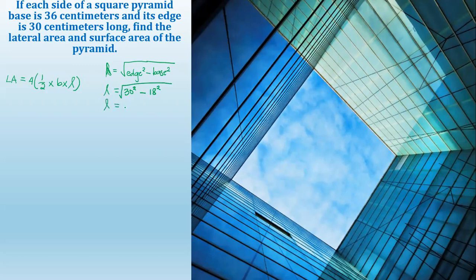Slant height equals 30 squared is 900, meaning 30 times 30 is equal to 900, minus 18 squared is equal to 324. And then subtract 900 minus 324 equals 576. And then the square root of 576 is equal to 24 centimeters. So this is our slant height. So we have now the slant height.